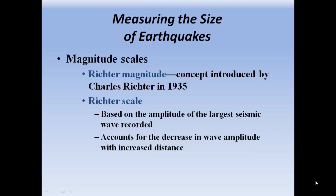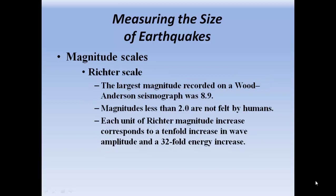The Richter magnitude concept was introduced by Charles Richter in 1935. It's based on the amplitude of the largest seismic wave recorded for that earthquake and accounts for the decrease in wave amplitude with increasing distance. So if a seismic station is farther away from an earthquake, it's going to have a smaller amplitude — the scale takes that into account. The largest magnitude recorded on a Wood-Anderson seismograph was 8.9. Magnitudes less than 2.0 are not felt by humans. Each unit of Richter magnitude increase corresponds to a 10-fold increase in wave amplitude and a 32-fold energy increase.